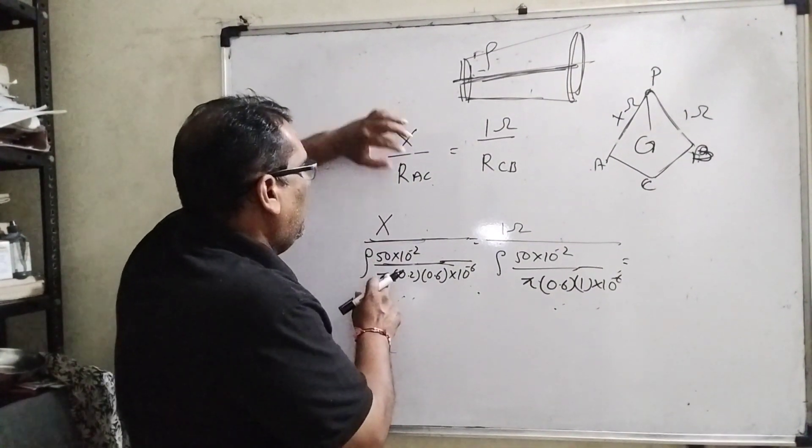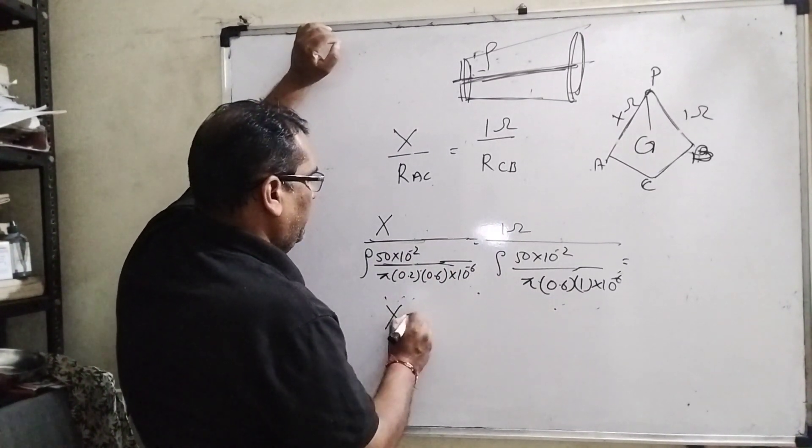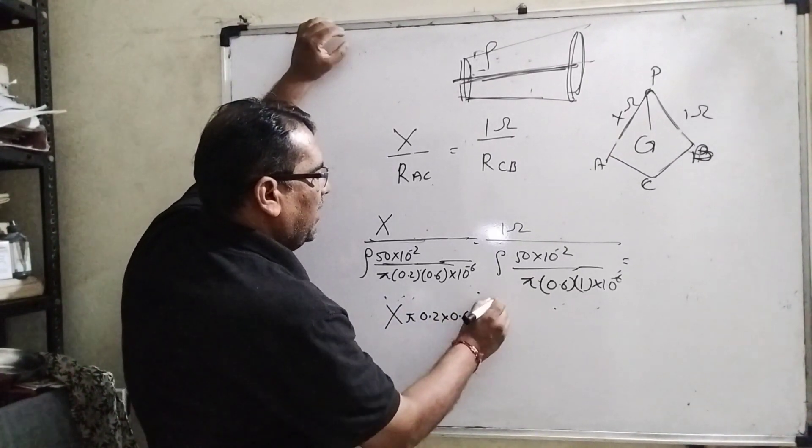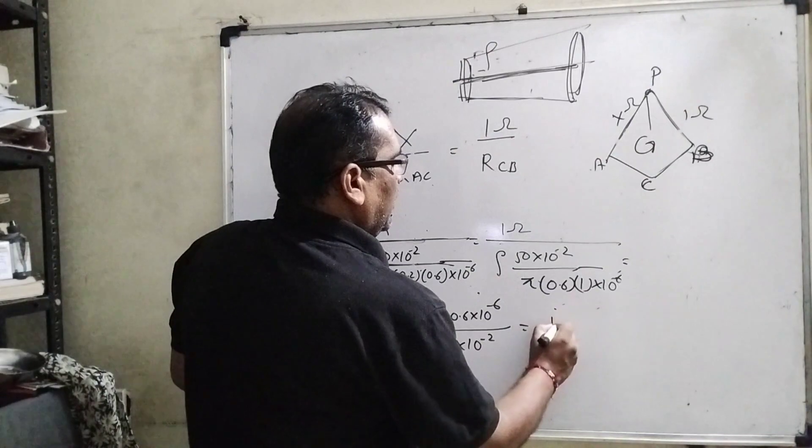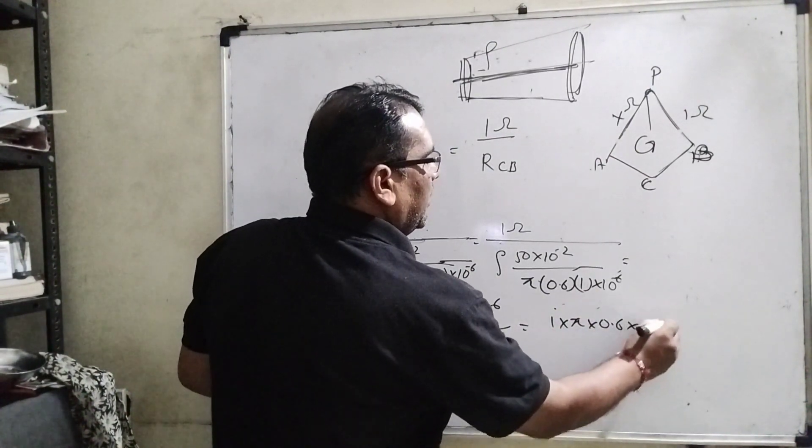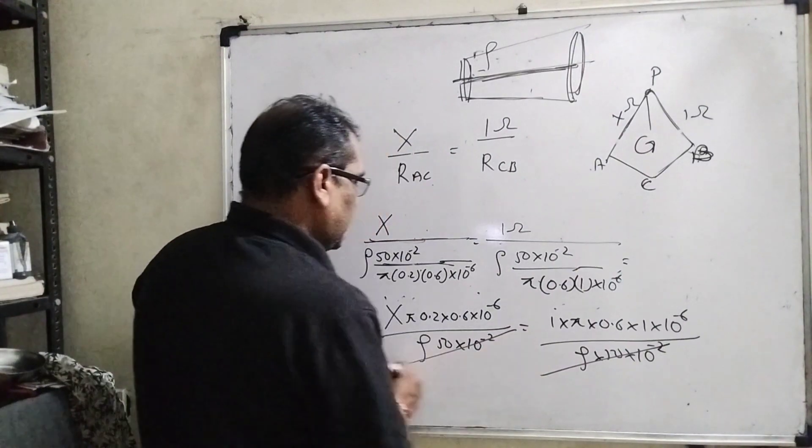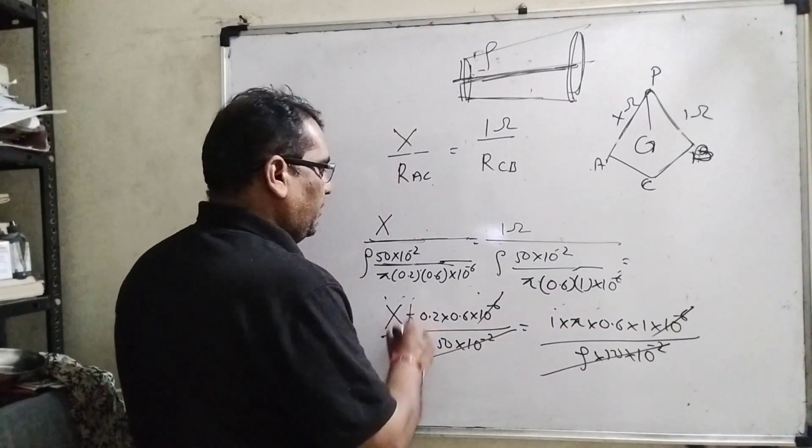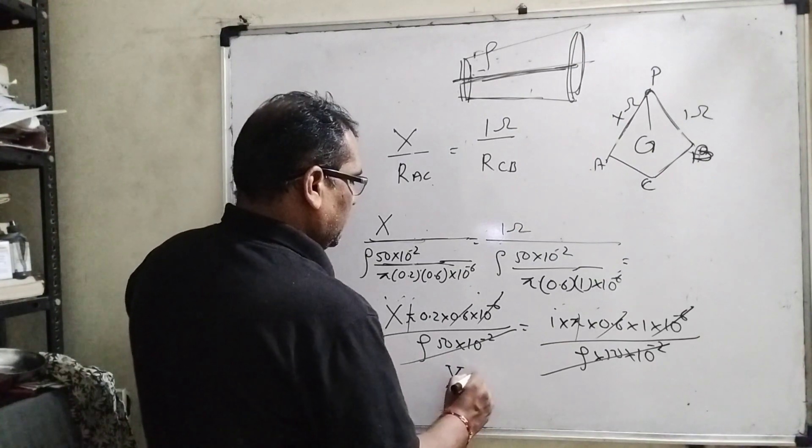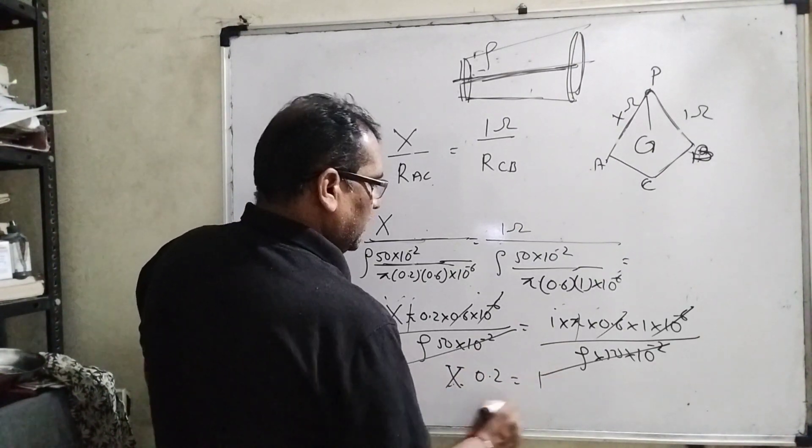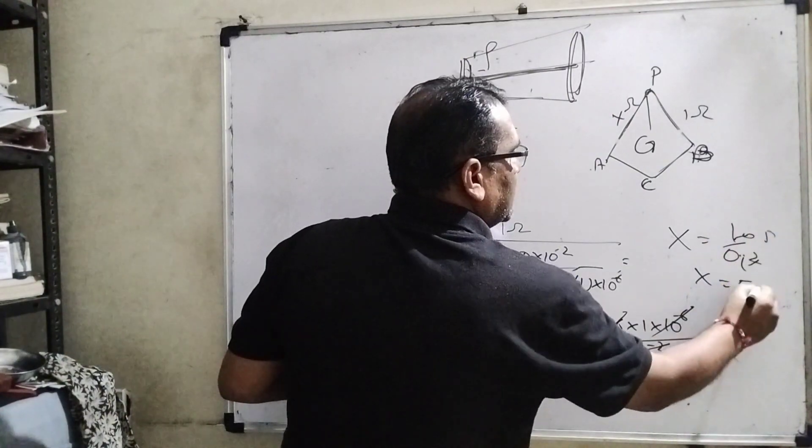Now X upon RAC equals 1 ohm upon RCB. Upon and upon goes to the numerator. Then X times pi times 0.2 times 0.6 times 10 raised to power minus 6 upon rho times 50 into 10 raised to power minus 2. And here, 1 into pi into 0.6 into 1 into 10 raised to power minus 6 upon rho into 50 into 10 raised to power minus 2. These total terms cancel out. 10 raised to power minus 6, 10 raised to power minus 6 cancel out. Pi gets cancelled. 0.6, 0.6 cancel out. So now remaining terms: X into 0.2 equal to 1. So X equal to 1 upon 0.2. X equal to 5 ohm.